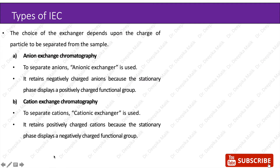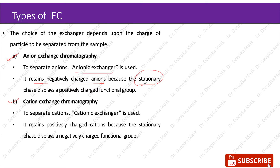The choice of the exchanger depends upon the charge of the particle to be separated from the sample. Based on this, ion exchange chromatography can be categorized into two types: anion exchange chromatography and cation exchange chromatography. To separate anions, an anionic exchanger is used. It retains negatively charged anions because the stationary phase displays a positively charged functional group.